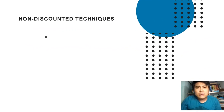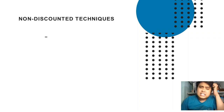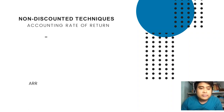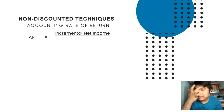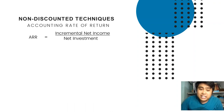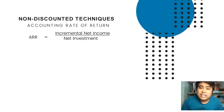Now, the real question is: how do I compute ARR? Accounting rate of return is computed as net income or incremental net income divided by your net investment. As you can see, it is very similar to the formula of ROA and ROI. Return on asset is net income over asset, and return on investment is net income over investment.